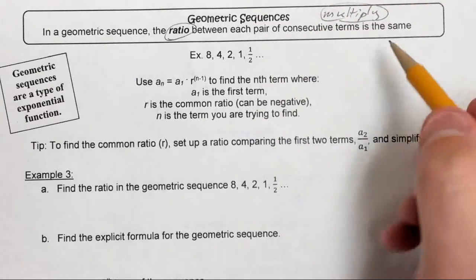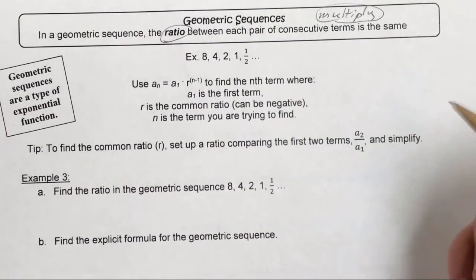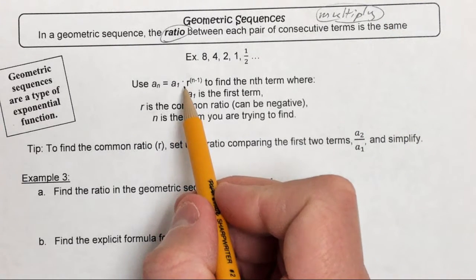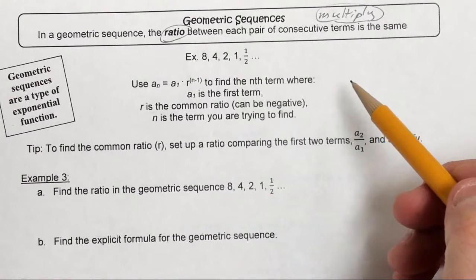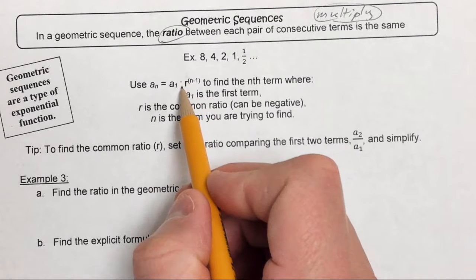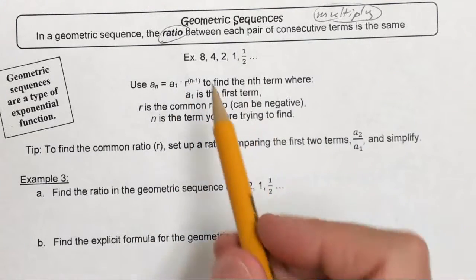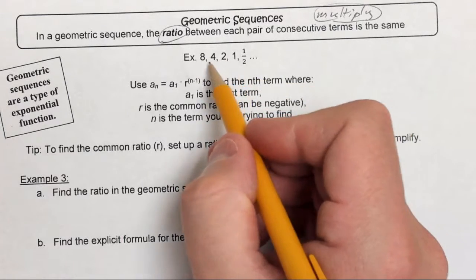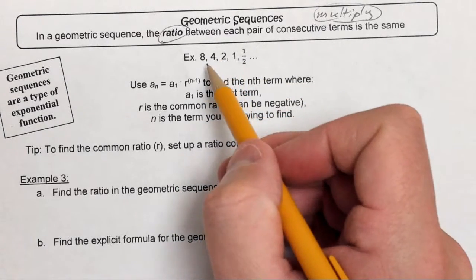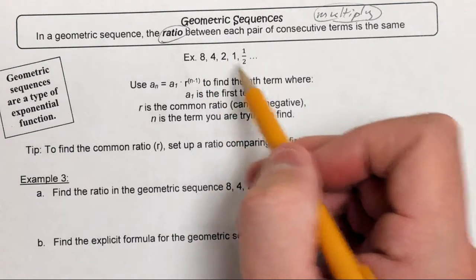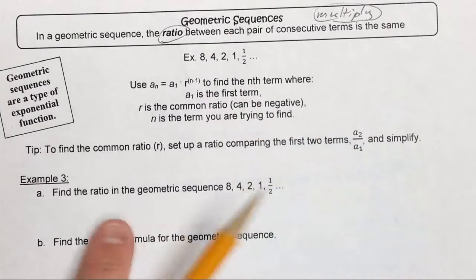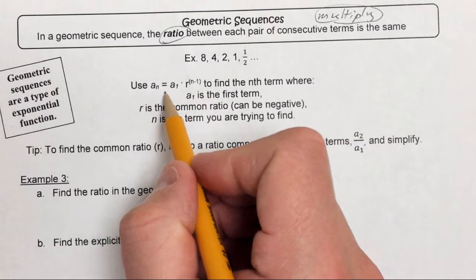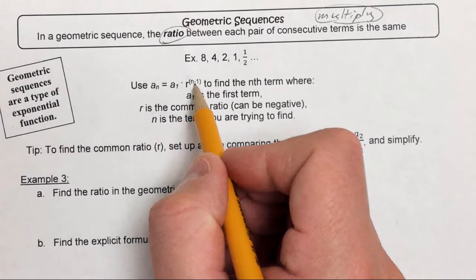In the particular equation we'll use for geometric sequences, we're multiplying. There are instances where you can divide by a number to get to the next term, but for the equation we're building, we have to multiply. In this example, the sequence is 8, 4, 2, 1, one-half. Notice there's no common difference by adding or subtracting; we're multiplying 8 by a number to get to 4, then 4 by that same number to get to 2, and so on. The equation is: a sub n equals a sub 1 times r to the n minus 1 power, where r is the common ratio.